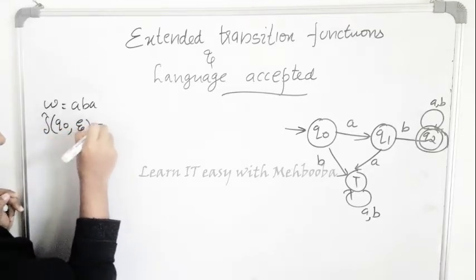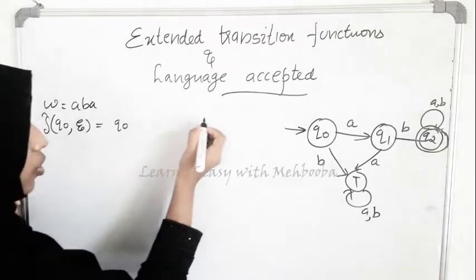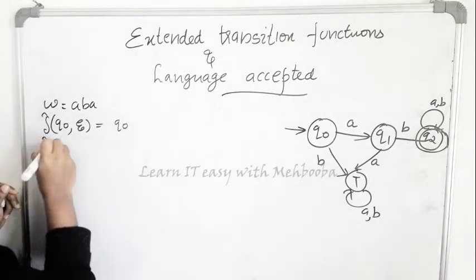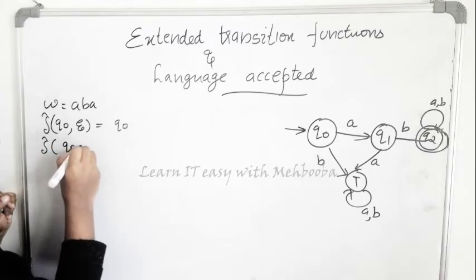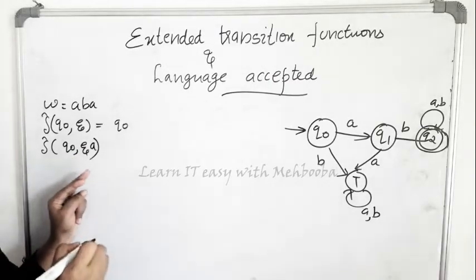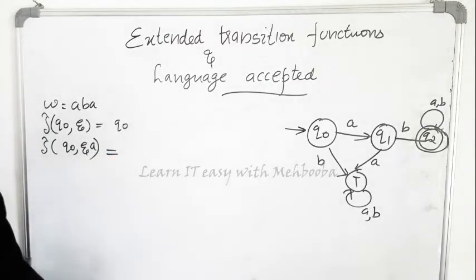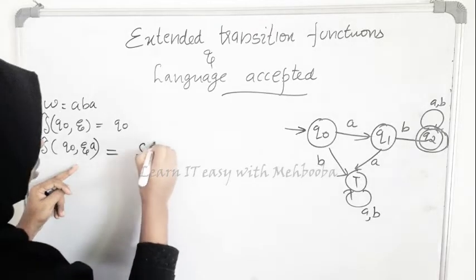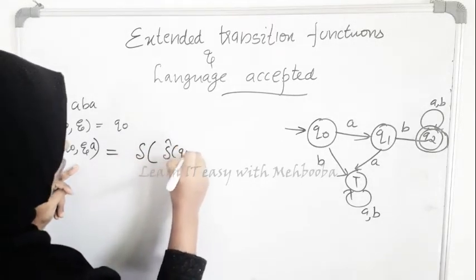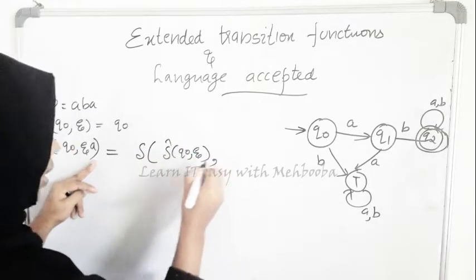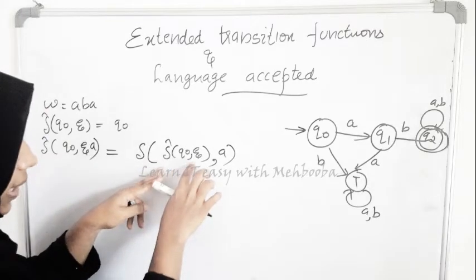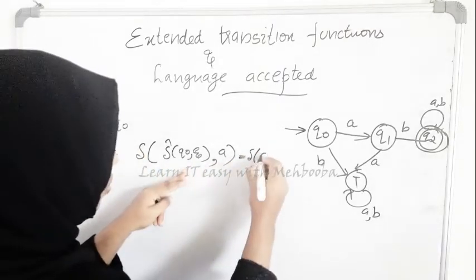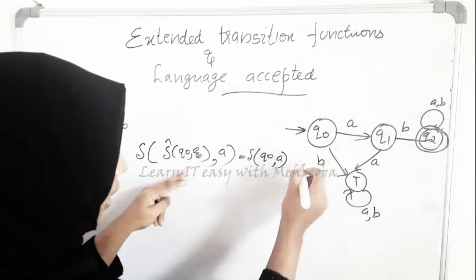To start with, delta-cap(q0, epsilon) = q0 itself. Now I write delta-cap(q0, epsilon·A). By our previous theorem, this is equivalent to delta of delta-cap(q0, epsilon), comma A. Since delta-cap(q0, epsilon) = q0, we get delta(q0, A) = q1.